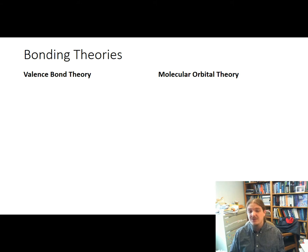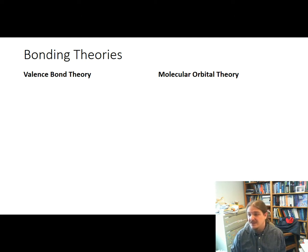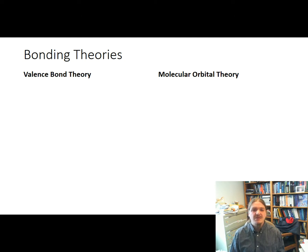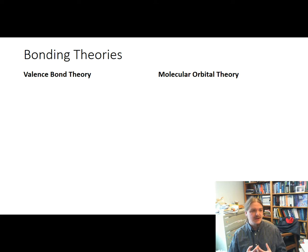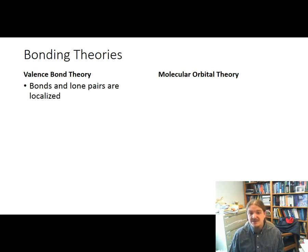I want to compare molecular orbital theory to the other predominating quantum mechanical bonding theory, valence bond theory. For students of organic chemistry, you're much more familiar with valence bond theory, even if you've never heard it called that, even if you've not thought about it from the quantum mechanical level. Most of the bonding theory you're using to understand covalent bond structures in organic chemistry is valence bond theory. In valence bond theory, bonds and lone pairs — all electron pairs, really — are localized.